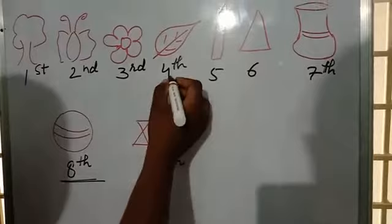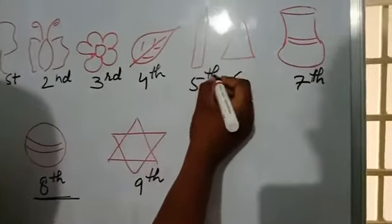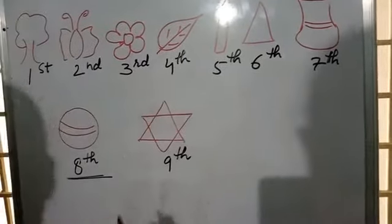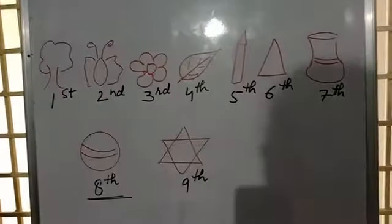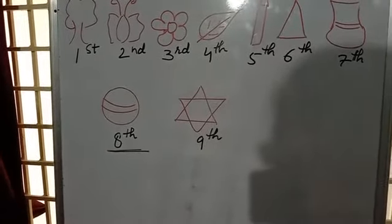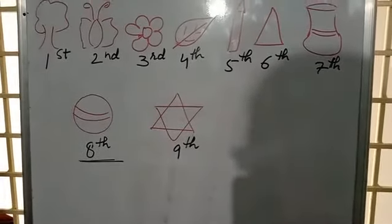And for number 4 onwards, it is TH. So number 4th, 5th, 6th, 7th, 8th, 9th. Okay? Now see this. These are the short form of ordinals.